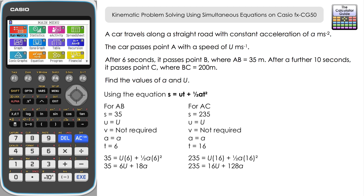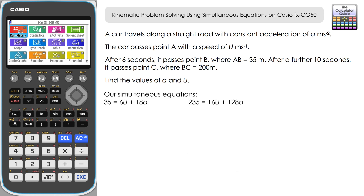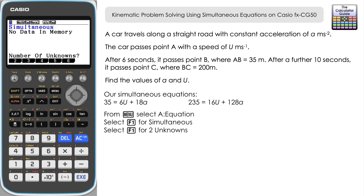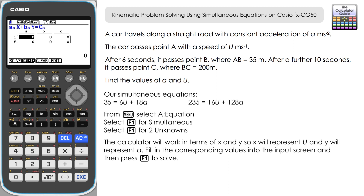We've got two unknowns and two equations, so we should be able to solve these using the calculator. From the main menu go to Equation. From equation you're prompted for the type — press F1 for simultaneous. Then select the number of unknowns: we have two, U and A, so press F1. The calculator works in terms of X and Y, so U is X and A is Y. For the first equation we have 6U, so A is 6.